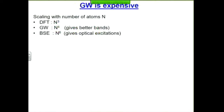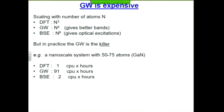So why is it so expensive? Density functional theory scales like the cube of the number of atoms, GW like the fourth power. If you want to get optical excitations, there's something else called BSE which scales like N to the sixth — but in practice, the scaling is very different. For a small system of 50 to 75 atoms of gallium nitride, normalizing DFT to one CPU-hour, GW is the real killer. You get the optical spectrum basically for free even though it's supposed to scale like N to the sixth. So we're going to focus on GW.